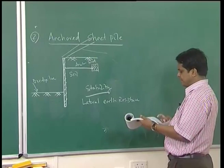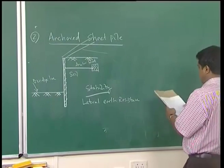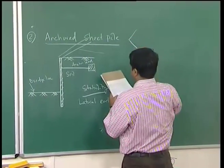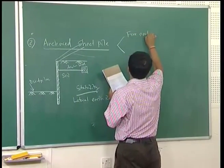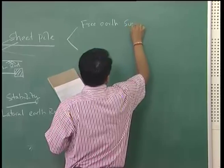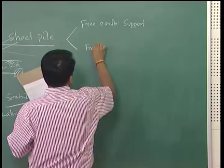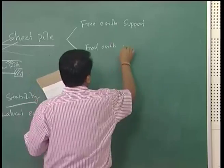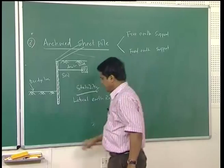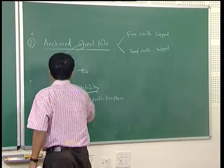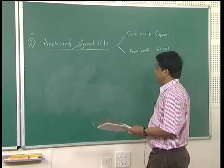Next, we look at what materials are used for sheet piles. The anchored sheet pile is again classified into two parts: one is your free earth support and the other is your fixed earth support.